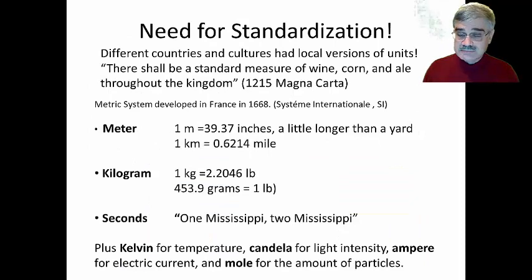Now, throughout ancient times, different countries or regions or cultures had different local versions of these units, especially the units for measuring mass and length. And one of the very earliest legal documents, the Magna Carta, is stated, there shall be a standard measure of wine, corn and ale throughout the kingdom. And so this was an early call for there to be standardization in our units of measure. Well, this attempt to standardize took a while.